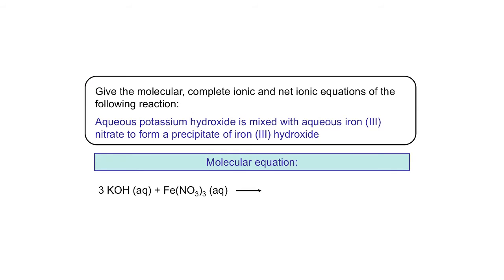Let's first write down the molecular equation for this reaction. On the reactant side we find two compounds — potassium hydroxide and iron 3 nitrate — written as single compounds, both in the aqueous phase. On the product side we find the precipitate iron 3 hydroxide, which is a solid, and potassium nitrate as a single compound fully dissolved in the aqueous phase.